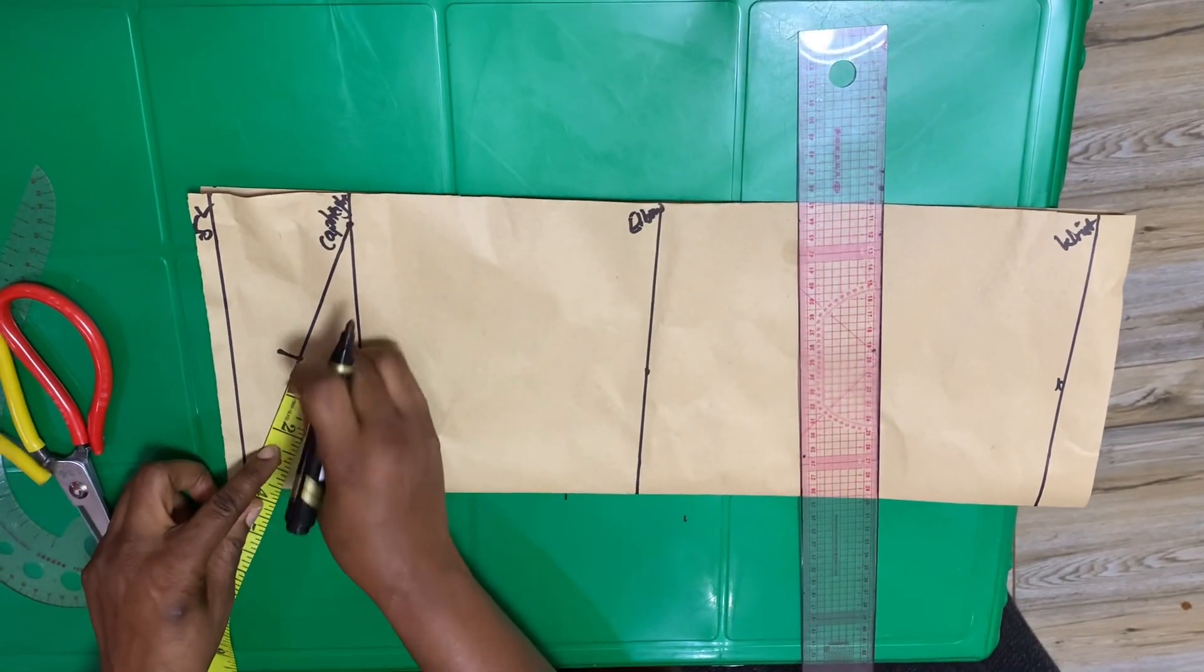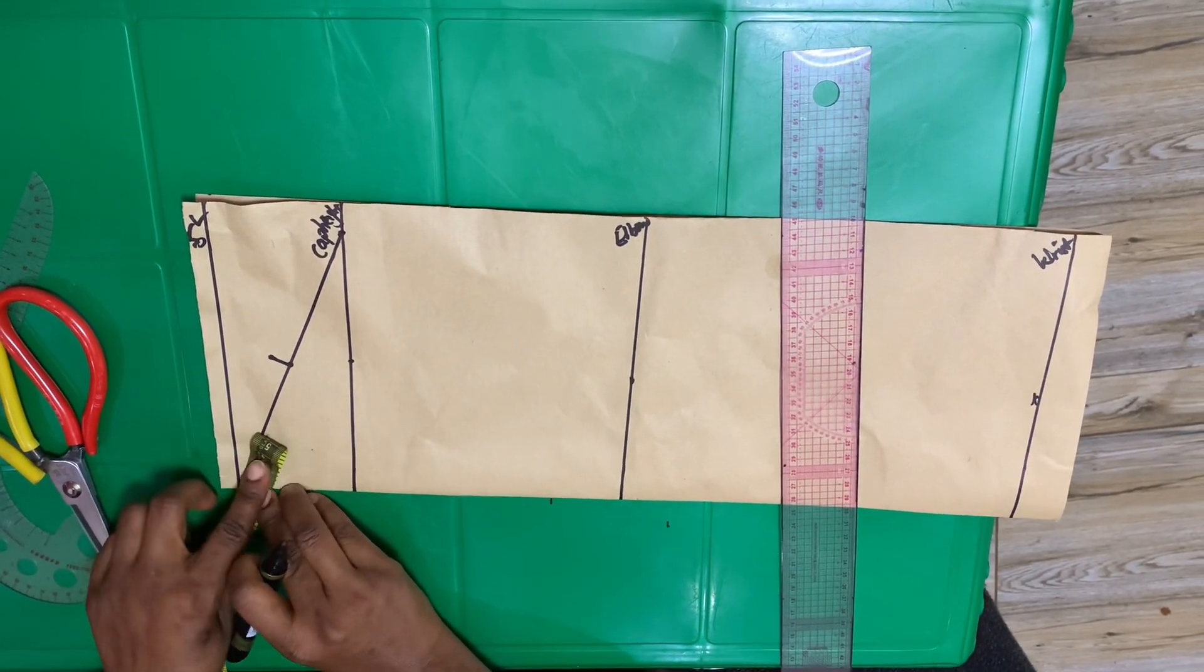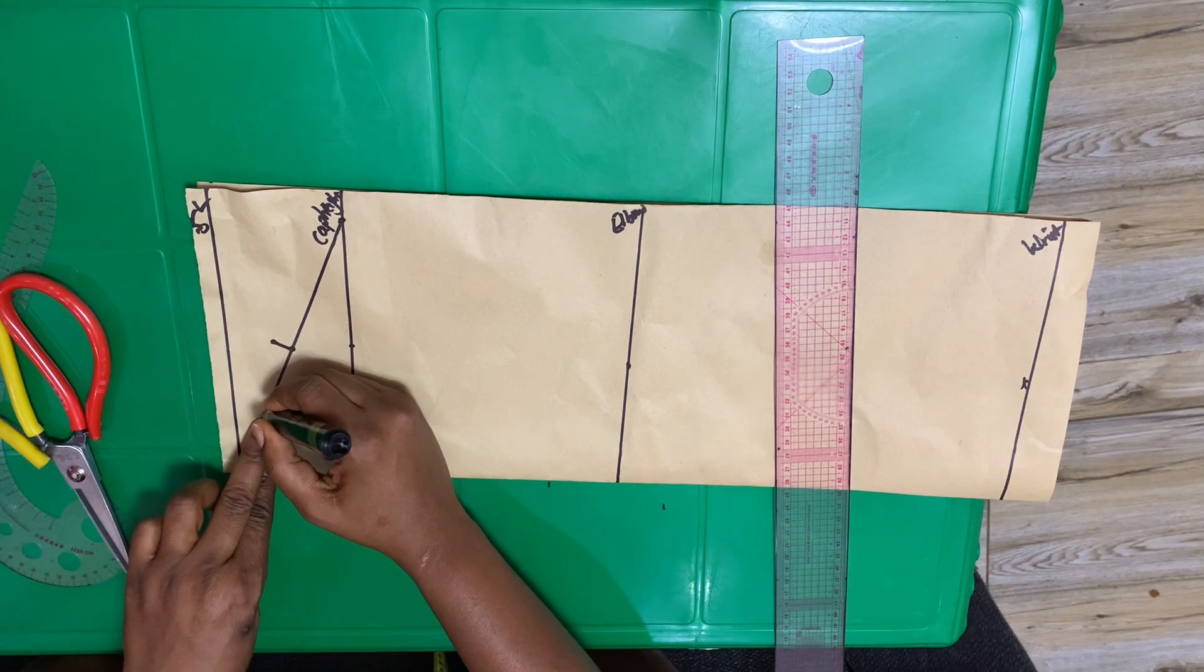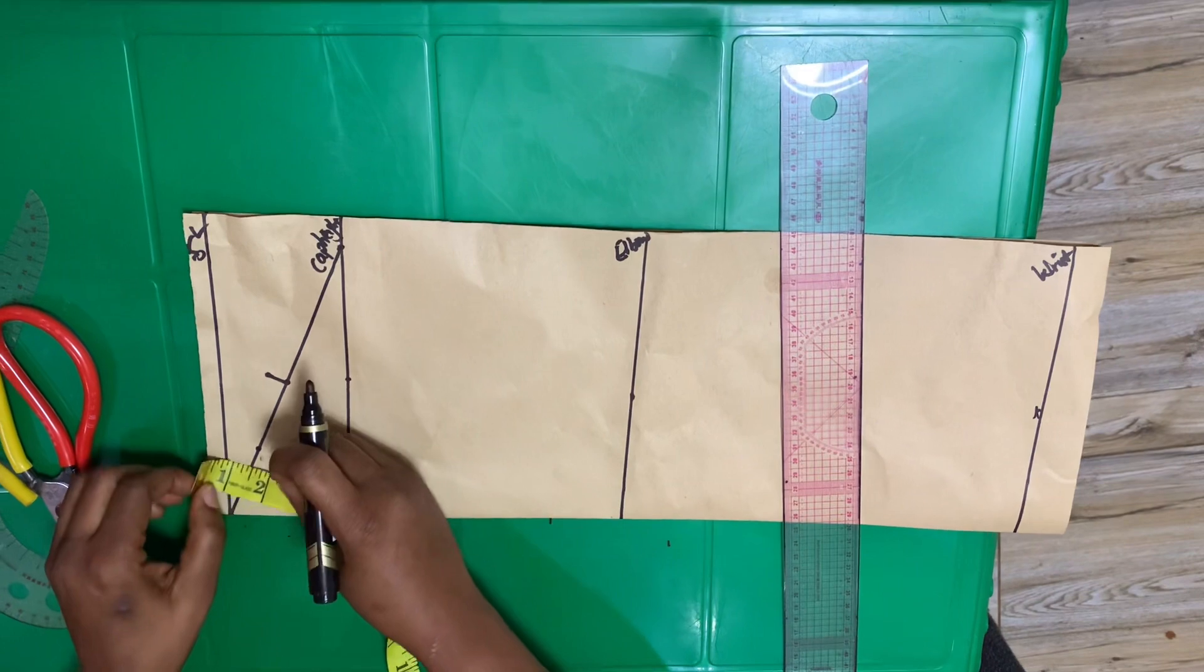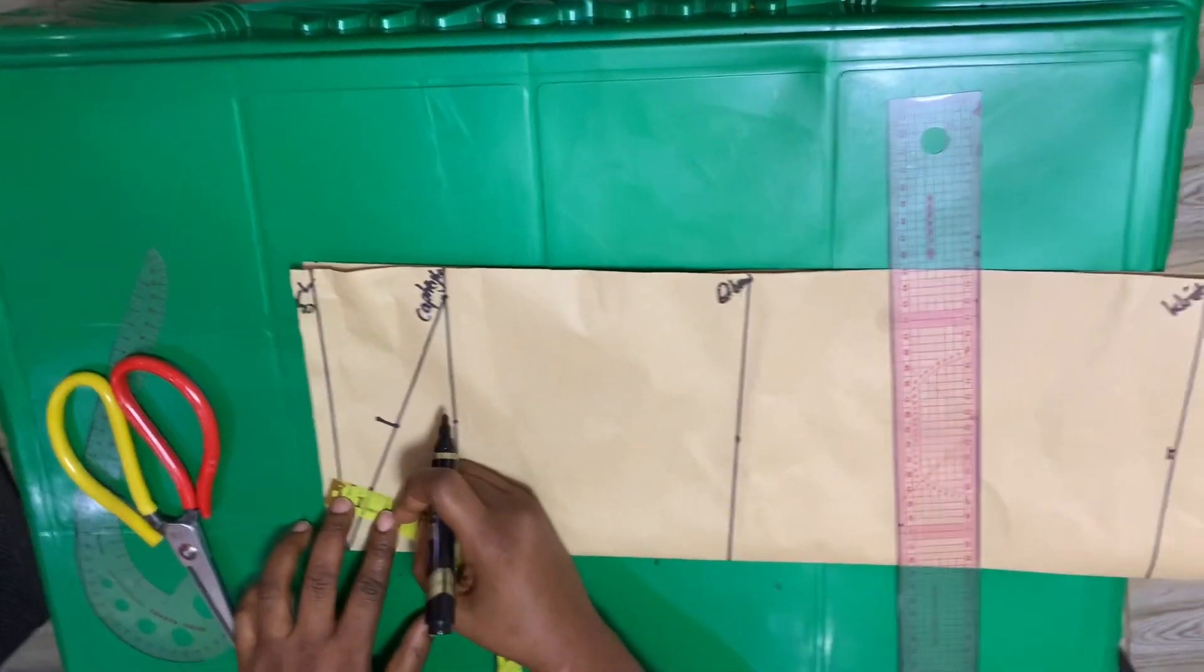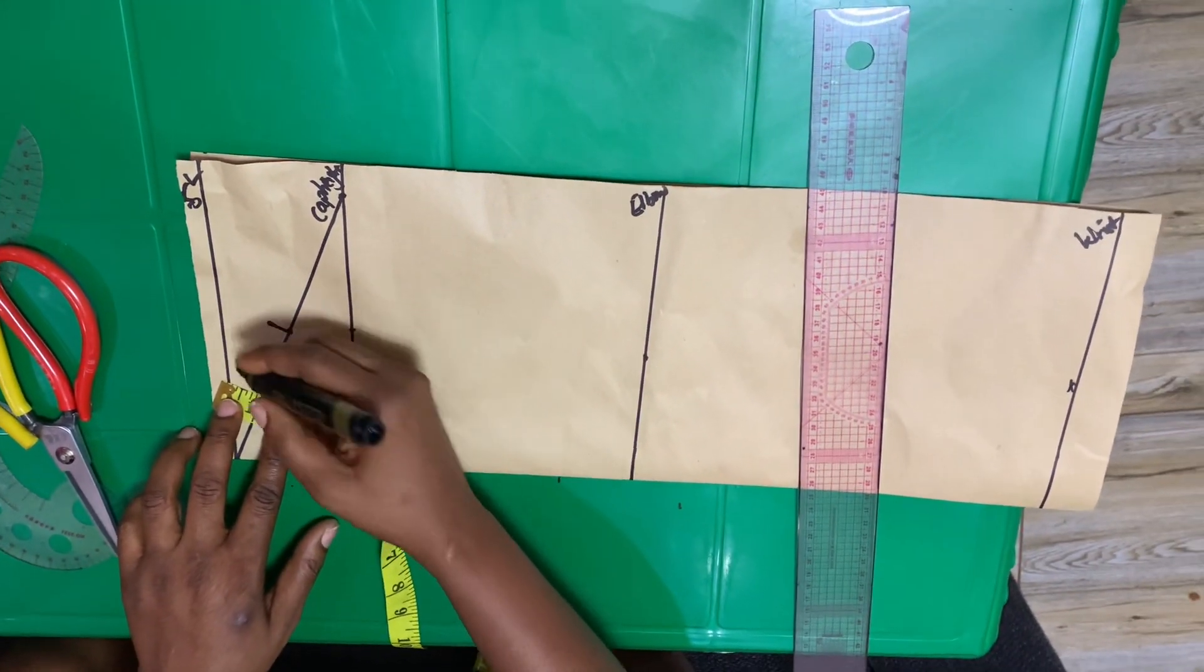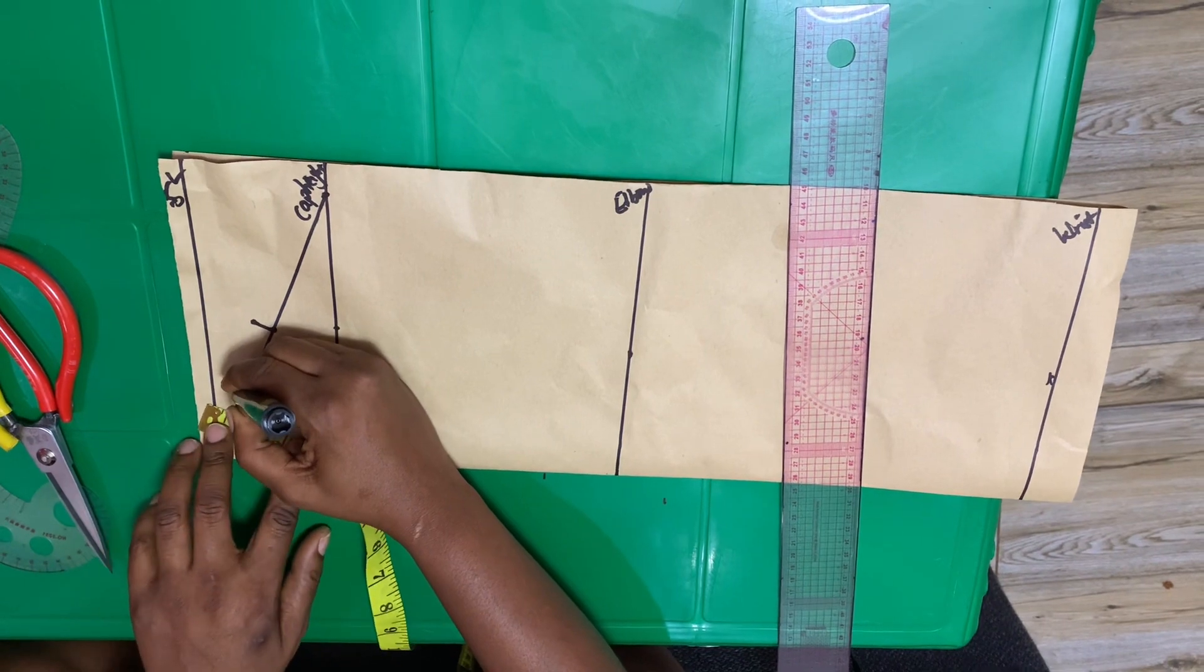We divided this slant line into two. For this first half, we will divide it again into two. Use the measuring tape, bend it like that, then mark it. Then go up by a quarter inch this time, not half inch.